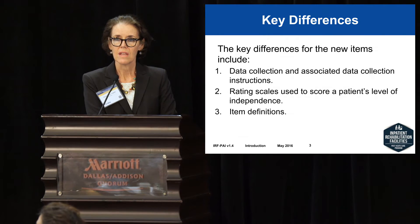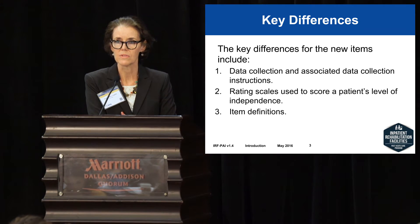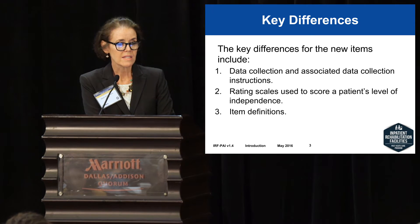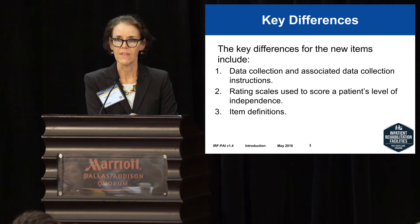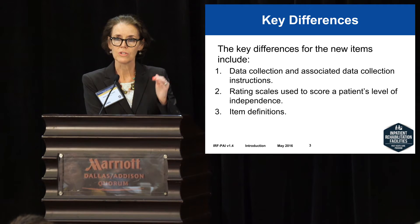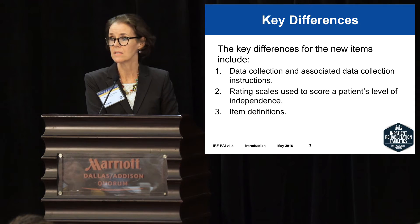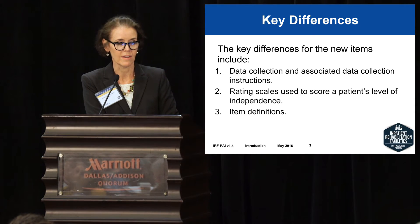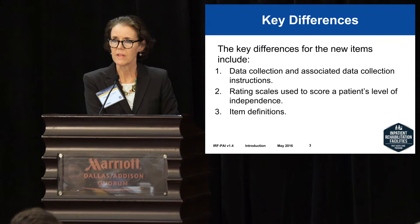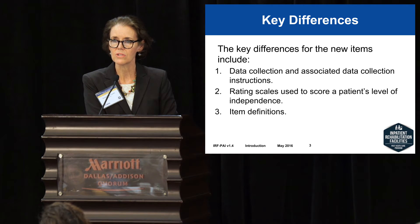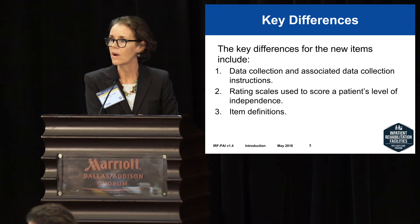Some of the key differences in the items being added to the 1.4 version compared to what we currently assess: the data collection and associated instructions are different — that's an important piece to know. The rating scales and the way we're going to score or code these items are different, and you need to recognize that. And the item definitions are different. You're really going to want to spend time looking item by item and make sure you understand the definition and can assess each item based on the new definition.